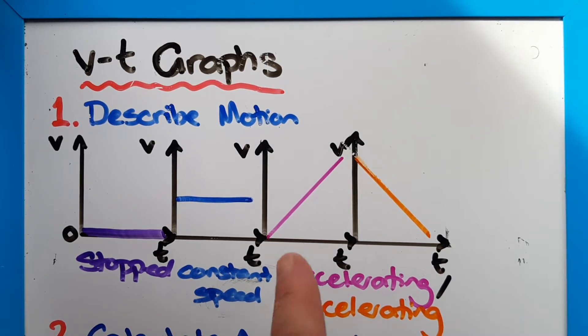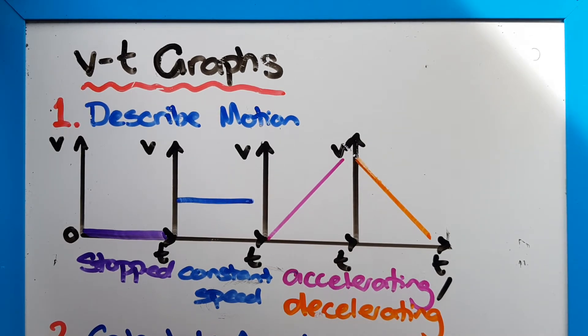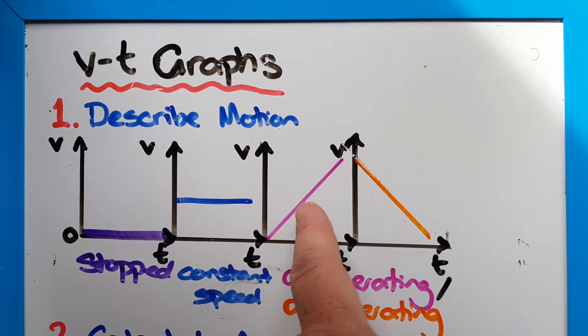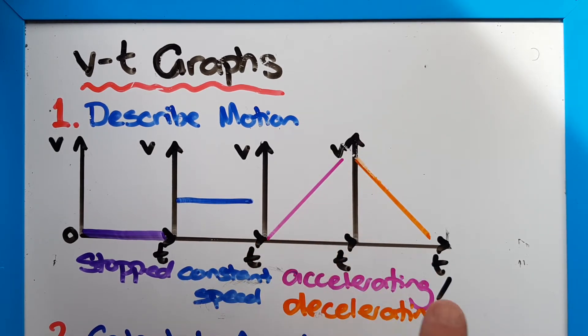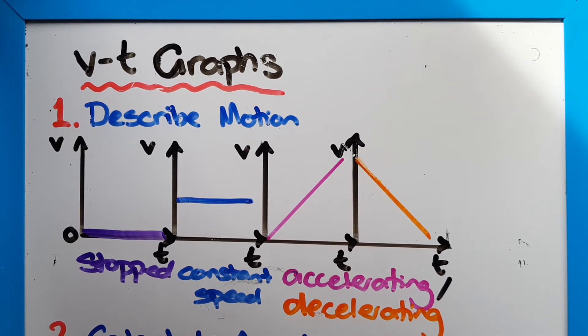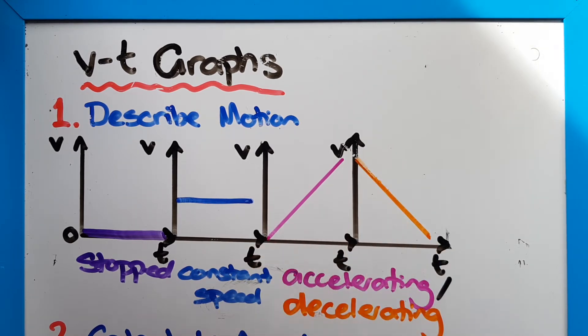But by definition, if as time continues the speed changes, this is called acceleration - a change in speed. The pink line is showing speeding up and the orange line is showing slowing down. It doesn't mean going backwards, it means slowing down. It still would be moving forwards because all of these speed values are above zero.